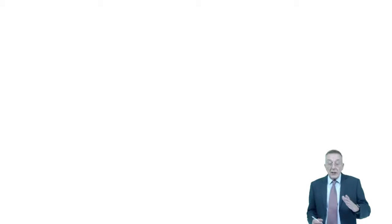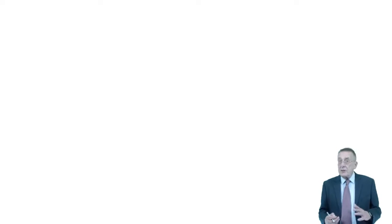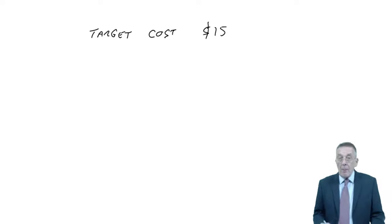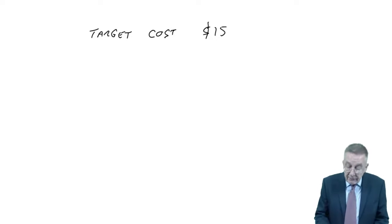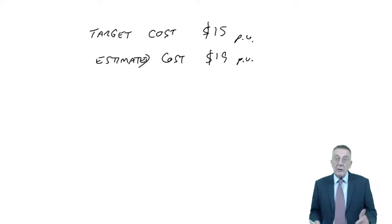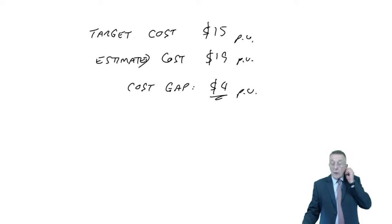Paragraph three says the use of the target cost. The target cost is the cost you're aiming for. You then compare it with your estimate of what the actual cost of production is going to be. If we've decided the target cost is $15 per unit, then to achieve our profit, we need the actual cost to be less than 15. But if the estimated cost is higher — let's say $19 per unit — we're not going to get the profit we want. The difference we call the cost gap: four dollars per unit.